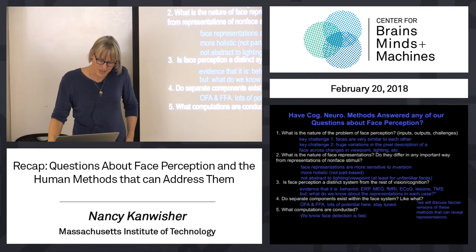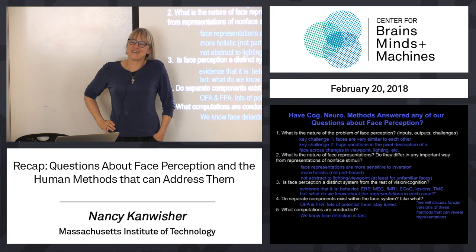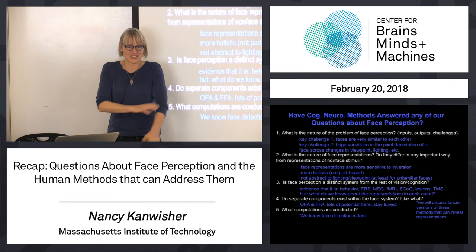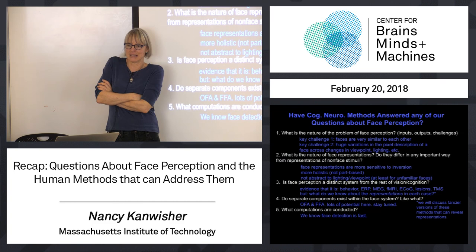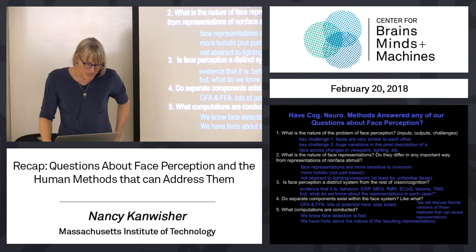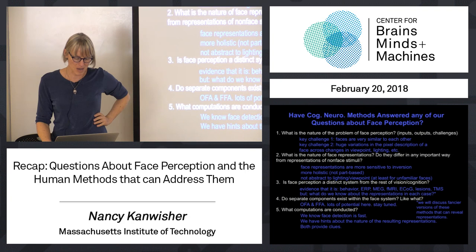A full account of face recognition in humans would be like the code — what are the series of computations that are going on? I'd give the field a B-minus at best so far. Part of the problem is that all of these methods give us hints about the representation, but they're kind of impoverished. They provide clues, but they don't really nail what is represented and what is computed, when and how.